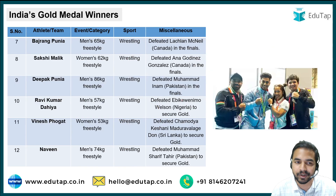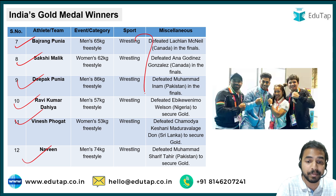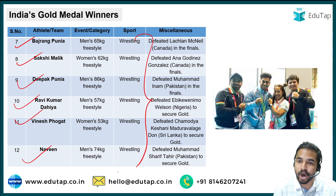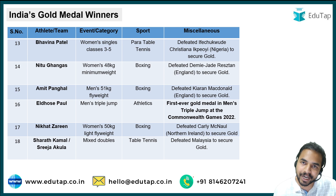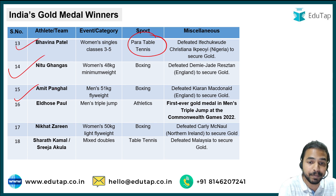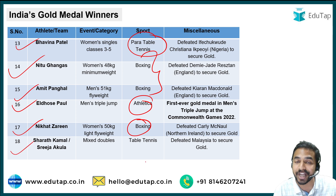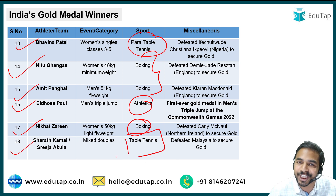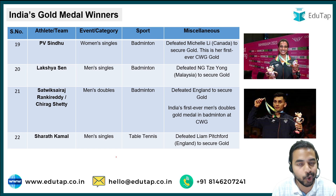Other gold medal winners from India include Bajrang Punia, Sakshi Malik, Deepak Punia, Ravi Kumar Dahiya, Vinesh Phogat, and Naveen — all from wrestling. Apart from that, Bhavina Patel won in para table tennis, Nitu Ghanghas and Amit Panghal won in boxing, Eldhose Paul won in athletics, Nikhat Zareen won in boxing, and Sharath Kamal along with Sreeja Akula won gold in table tennis. Details of whom each player defeated have been mentioned in the slide.